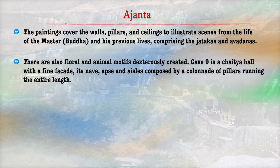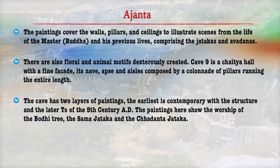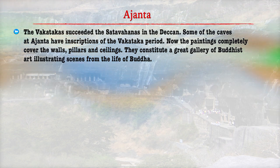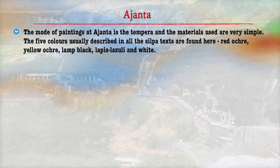Cave 9 is a chaitya hall with fine pillars throughout the hall and has two layers of paintings. The earliest is contemporary with its structure and the latest dates to the 5th century AD, showing the worship of the Bodhi tree. The Vakatakas succeeded the Satvahanas in the Deccan, and the caves at Ajanta also have inscriptions of the Vakataka period. The paintings completely cover the walls, pillars and ceilings, constituting a great gallery of Buddhist art illustrating scenes from the life of Buddha. The material used is simple — generally five colours comprising red ochre, yellow ochre, lamp black, lapiz and white.